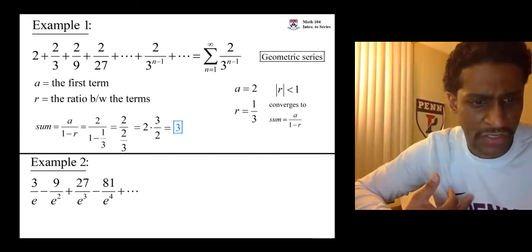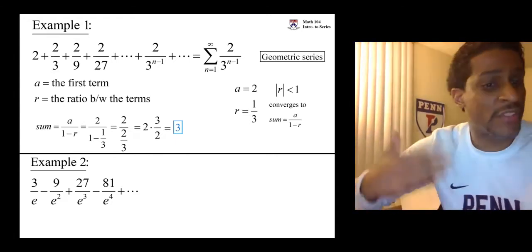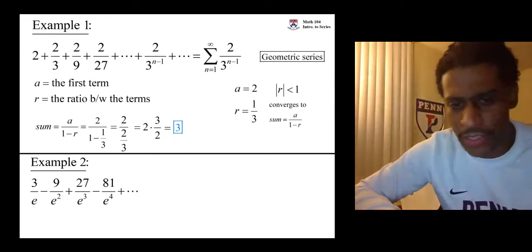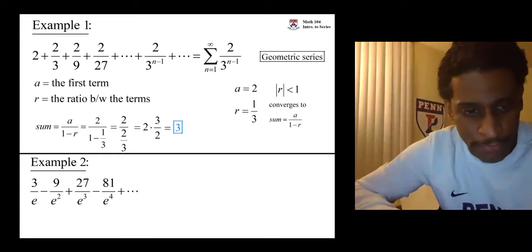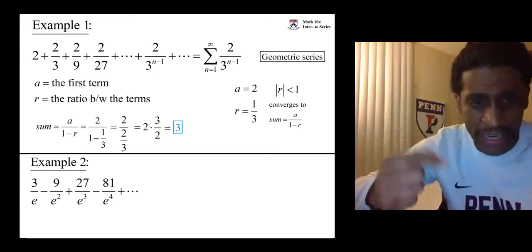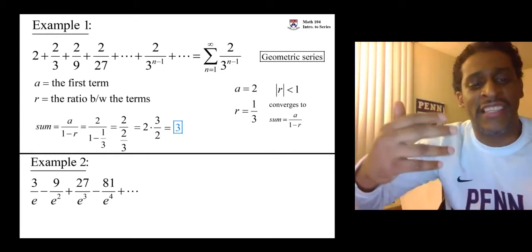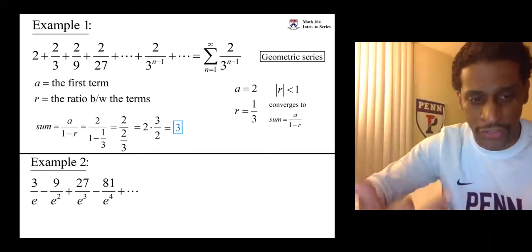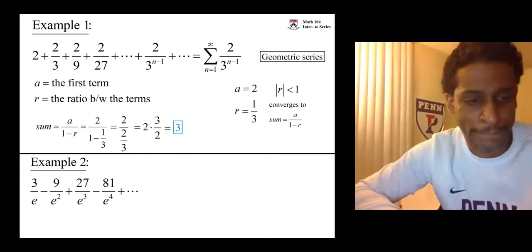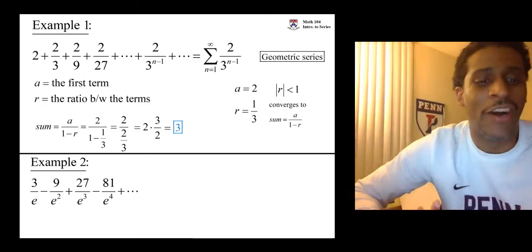Is it geometric series? How do we know? And if it is, what does it do? Does it converge or diverge? If it converges, what does it converge to? How do you get from one term to the next? Is it by multiplying by a common ratio? How do you get from 3 over e into negative 9 over e squared? What did you multiply by? Negative 3 over e.